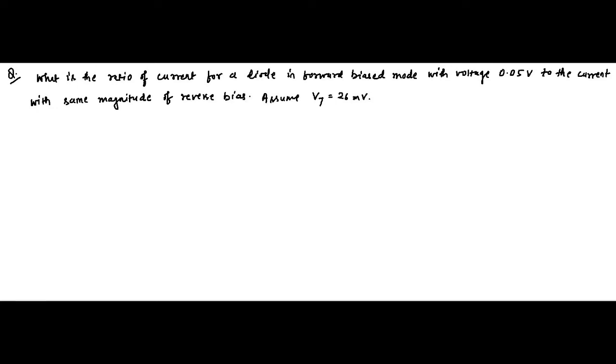Here we are with another question on diode current equation. The question is: what is the ratio of current flowing through a diode in forward bias mode with a voltage of 0.05 volt to the current flowing through the diode when a reverse bias voltage of the same magnitude is applied, and the thermal voltage is 26 millivolt?